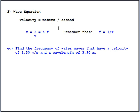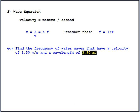Let's try the wave equation with this example. We need to find the frequency F for water waves that have a velocity of 1.3 meters per second, where the distance from crest to crest is 3.9 meters. Using V = λf, we know V and lambda and we're solving for F. We divide 1.3 by 3.9, and the frequency is 0.333 hertz.